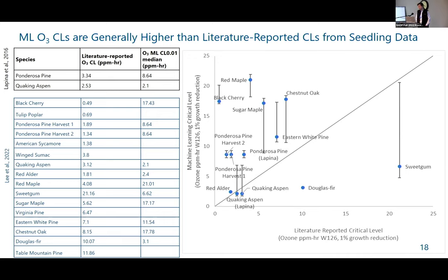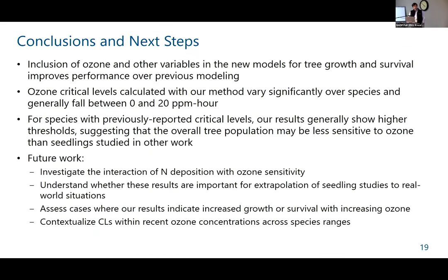There are some thoughts about why our critical levels are higher. One is that in the literature, seedlings — which generated the literature-reported values — may be more sensitive to ozone exposures and may have higher stomatal conductance, so a given ozone exposure causes a higher growth reduction. There may also be other factors, such as the correlation with nitrogen possibly inflating our critical levels. These are definitely something we want to understand better, but it's an interesting and useful result.